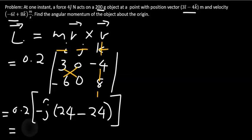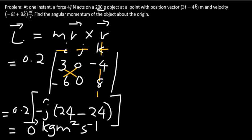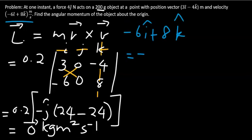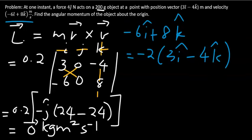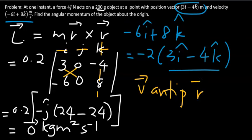The overall answer is the zero vector, 0 kg·m²/s. The reason is clear: the velocity vector, minus 6i-hat plus 8k-hat, equals minus 2 times (3i-hat minus 4k-hat), which is just the position vector. So the velocity vector is anti-parallel to the position vector, leading to a zero vector for angular momentum.